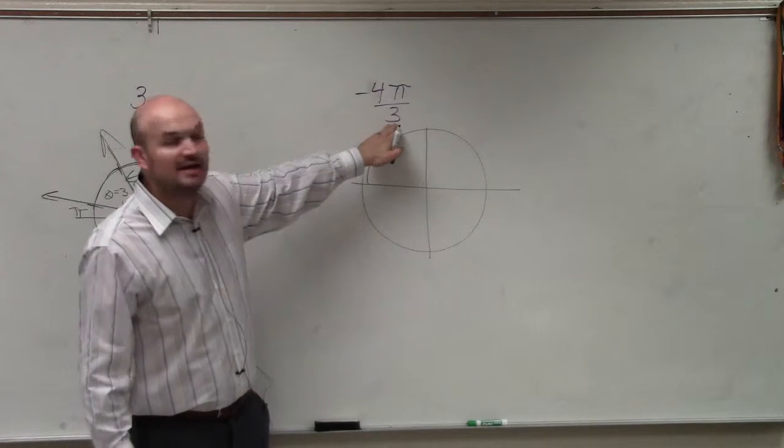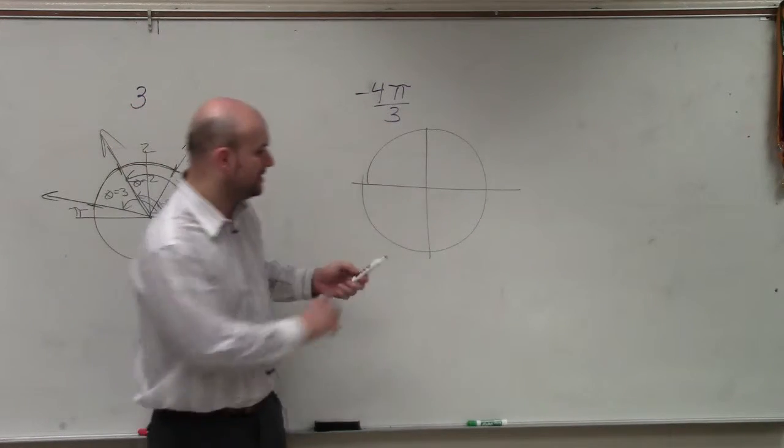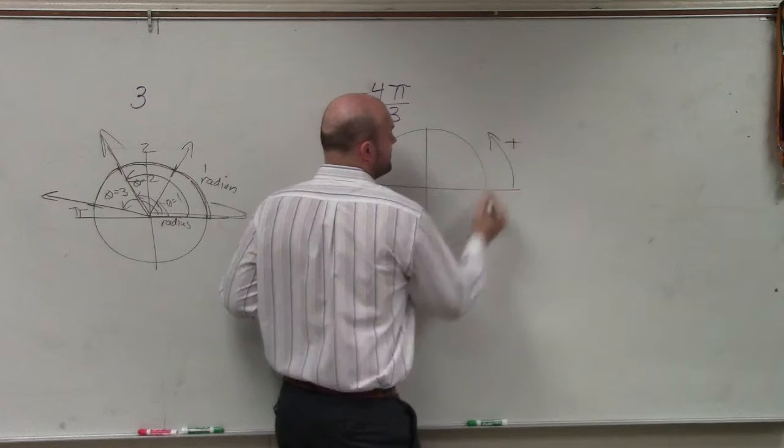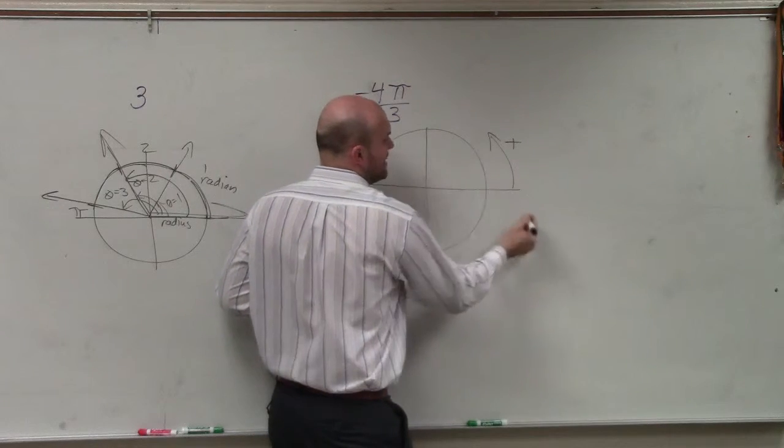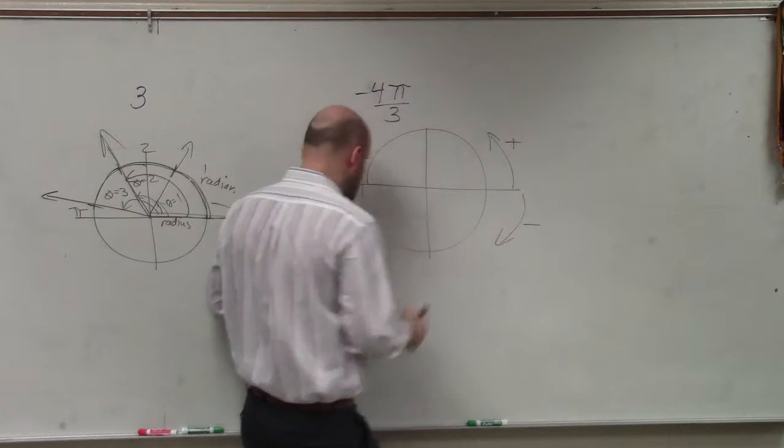So here we have π that's broken up into thirds. Now, in standard form, going counterclockwise is positive, and clockwise is negative.